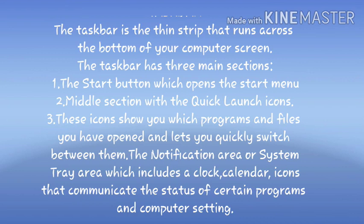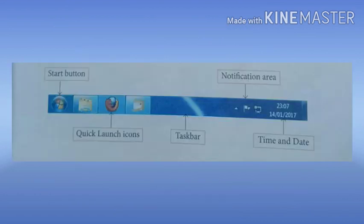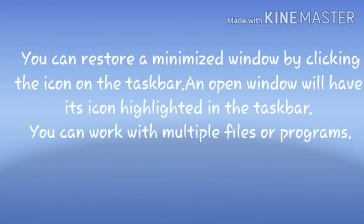The third section is the notification area or system tray, which includes a clock, calendar, and icons that communicate the status of certain programs and computer settings. The taskbar also shows icons of windows which have been minimized. By clicking those icons on the taskbar you can restore a minimized window. An open window will have its icon highlighted in the taskbar, allowing you to work with multiple files or programs. We will continue with the taskbar in the next class.